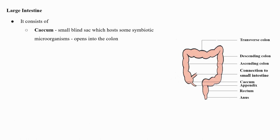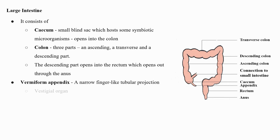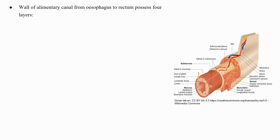The large intestine consists of the cecum, colon, and rectum. The cecum is a small blind sac which hosts some symbiotic microorganisms. The colon is divided into three parts: an ascending, a transverse, and a descending part. The descending part opens into the rectum, which opens out through the anus. The vermiform appendix is a narrow finger-like tubular projection — a vestigial organ that arises from the cecum.